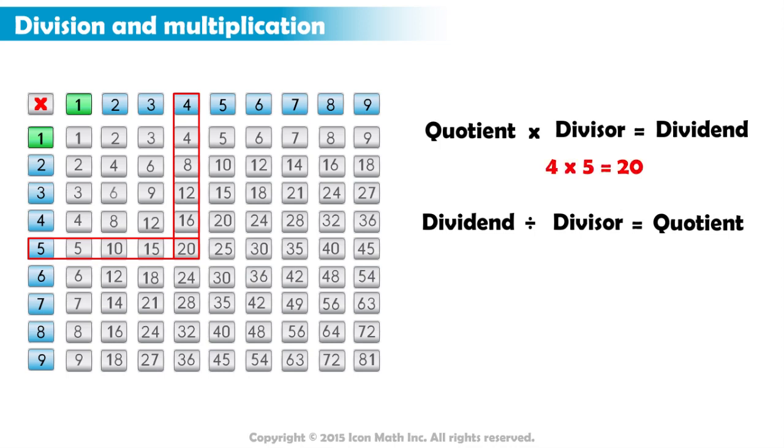Now, just plug in the numbers. 20 divided by 5 equals 4.